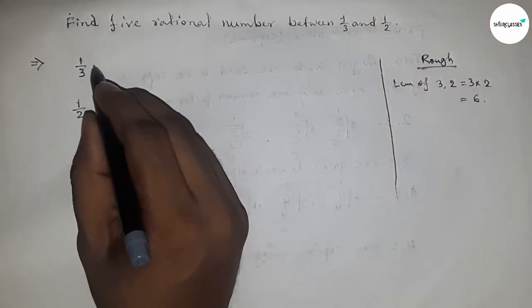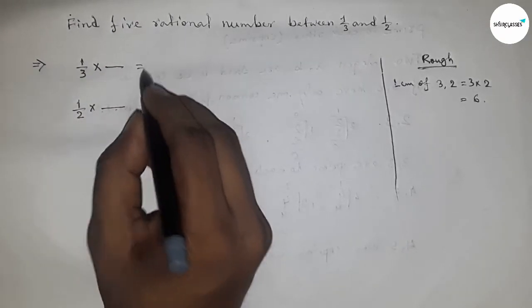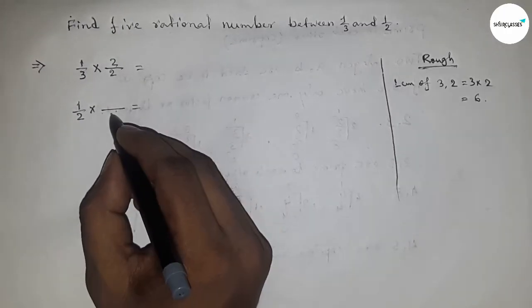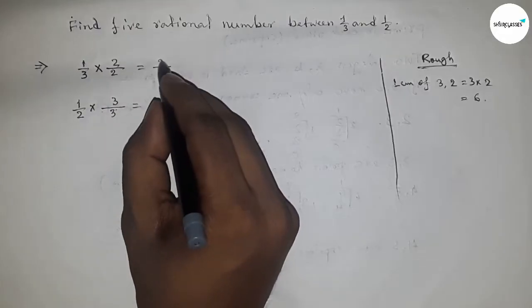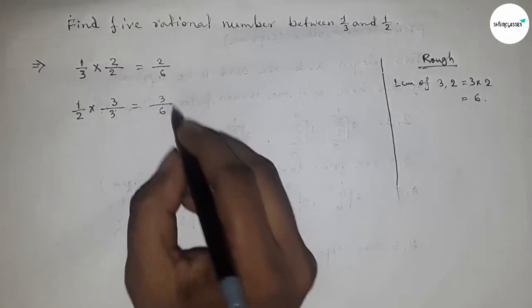So what should be multiplying here up and down and here similarly. If you multiply here by two and here by three, then this is two by six and this is three by six. So we got the same denominator.